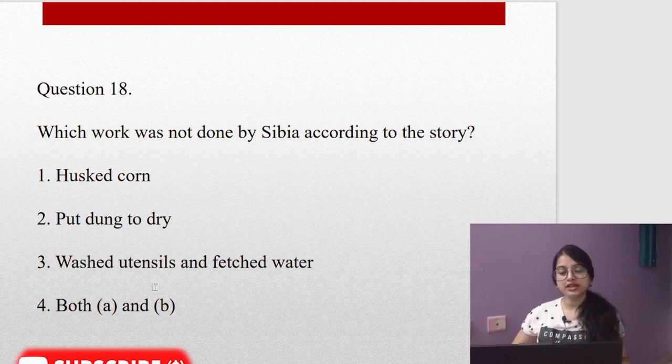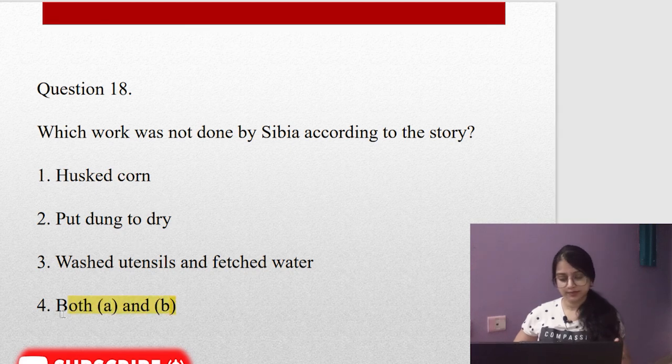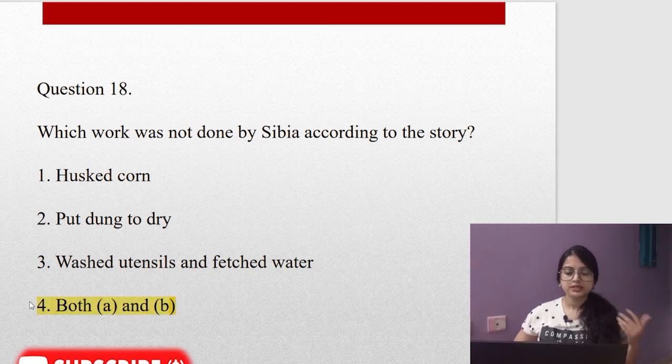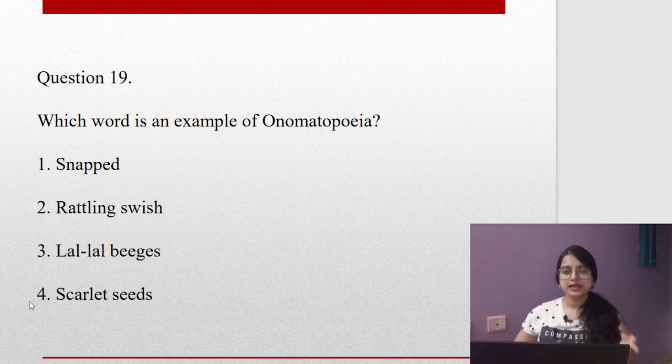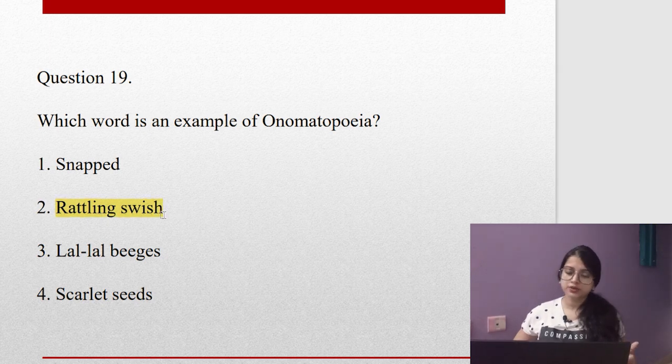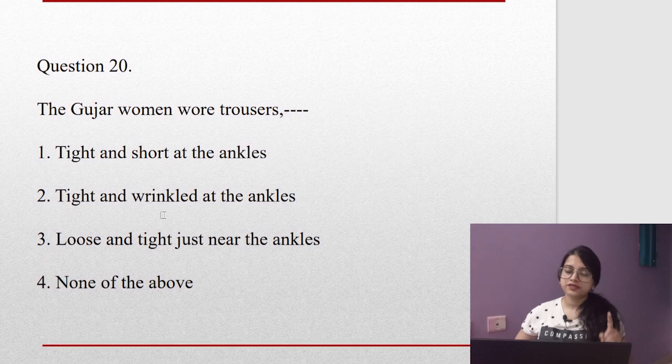Question eighteen: Which work was NOT done by Sibia according to the story? Is it husking corn, putting down to dry, washed utensils and fetched water? She did not wash utensils and fetch water—it is not written in the book. So it is going to be both A and B, that is put down to dry and husk corn. Question nineteen: Which word is an example of onomatopoeia? Snapped, lala beaches, scarlet seeds, or rattling swish? The swish sound is a sound word, so it is going to be onomatopoeia.